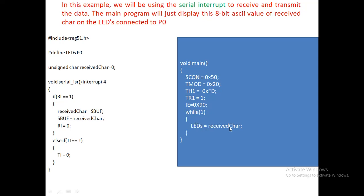In the while loop, LEDs is equal to receive_char. The entire port P0 is assigned to LEDs. The variable unsigned char receive_char is initialized to 0. I use the unsigned char data type because for the 8051 you should use unsigned char — do not use signed int or unsigned int because those consume 2 bytes of memory space. Using char data type consumes only 1 byte of program memory.